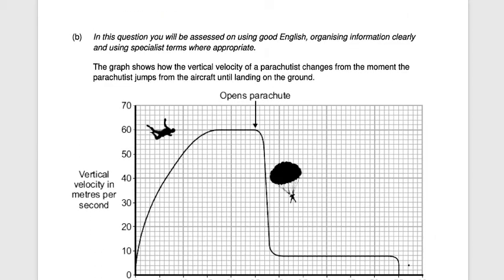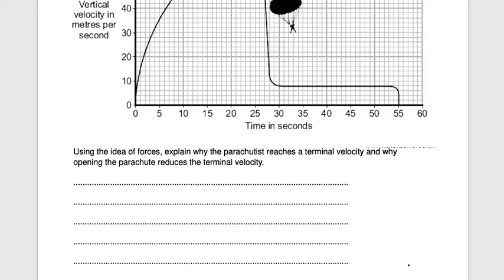This is the final question — a six-mark question where you will be assessed on using good English, organizing information clearly, and using specialist terms. The graph shows how the vertical velocity of a parachutist changes from the moment the parachutist jumps from the aircraft until landing on the ground. Use the idea of forces to explain why the parachutist reaches a terminal velocity, and why opening the parachute reduces the terminal velocity. In stage one, the weight is greater than the air resistance.